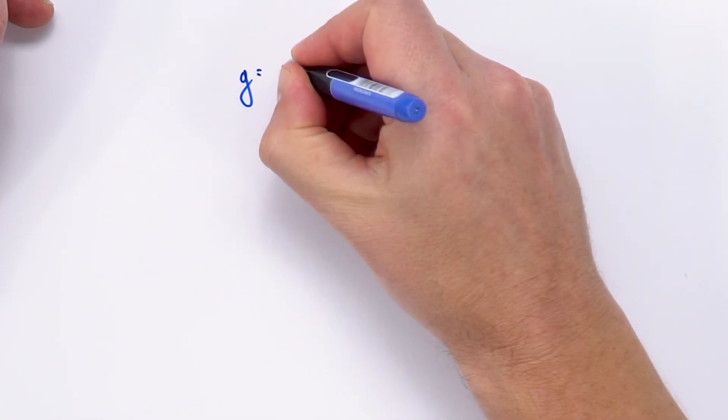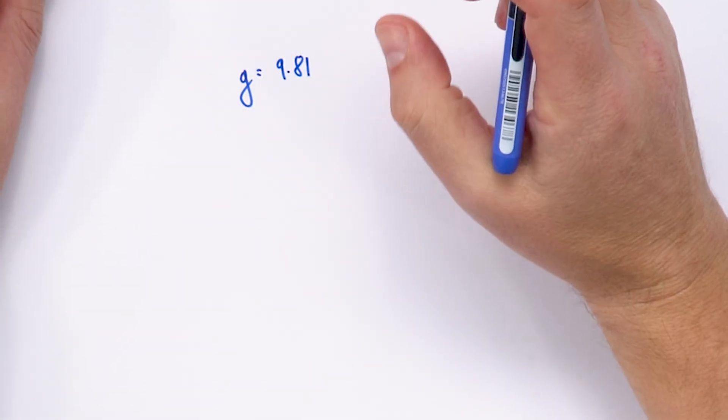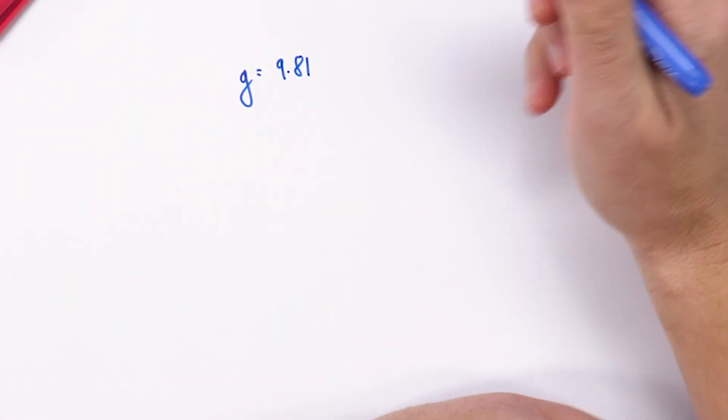Now for the other one little g this is much more standard. Now the value on the surface of the earth is equal to 9.81.